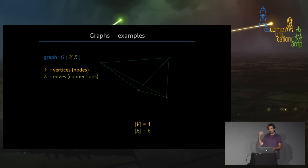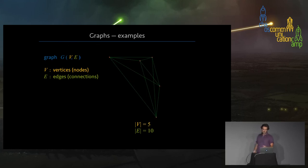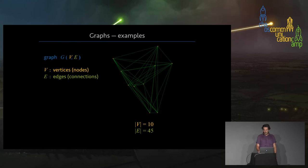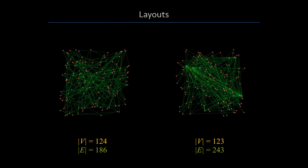Usually graphs are most easily represented as a set of points connected by lines in 2D. In this simple case it doesn't really matter how you choose positions because any way you choose them it will be a triangle. But as we go to graphs with four, five, or ten vertices, things become more complicated — it's harder to distinguish what is connected to what and what the structure is. Here are two layouts of two different graphs with roughly 124 and 123 nodes. In random layout they are very messy and almost impossible to understand.